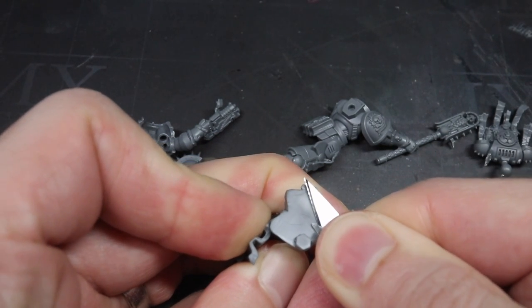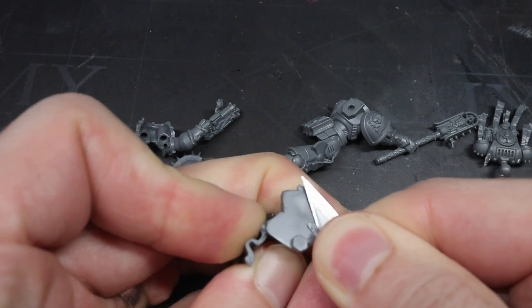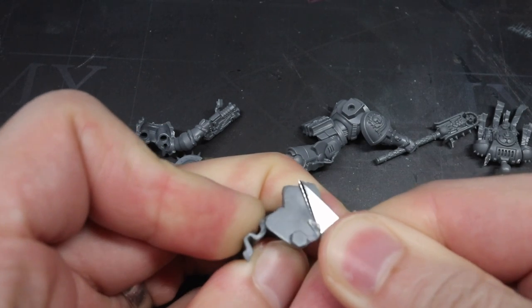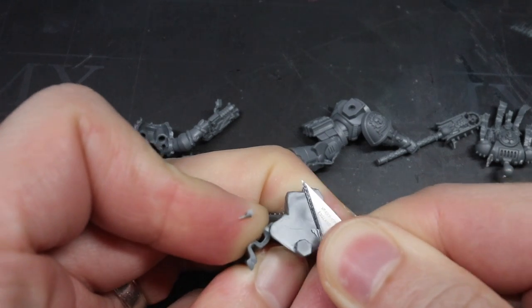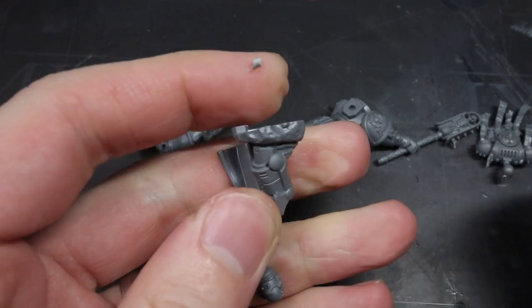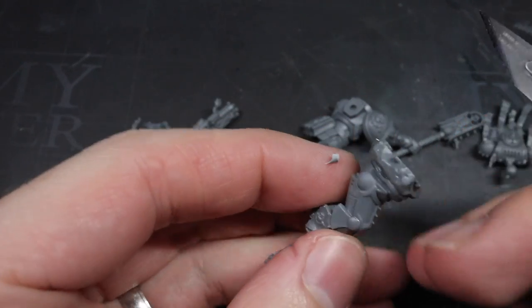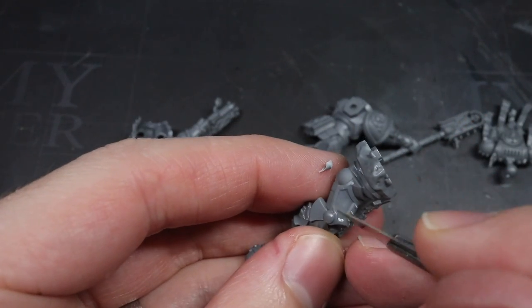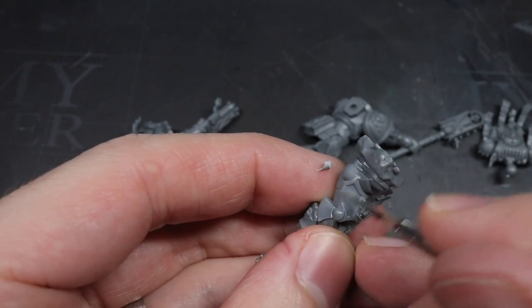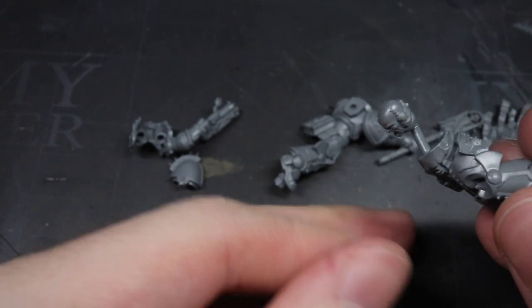As a result of this, the basis of this conversion came from the Primus Chaplain found within Indomitus, although I could have easily just used a regular Primus Chaplain instead. With the kit chosen, I started things off by clipping away all the components required to build this particular miniature from its sprue before cleaning them up with a knife.